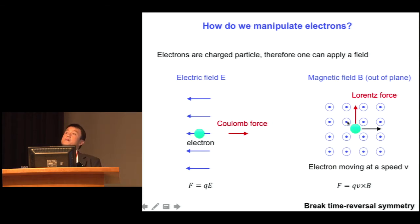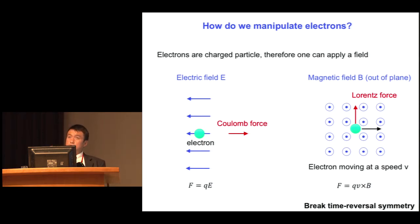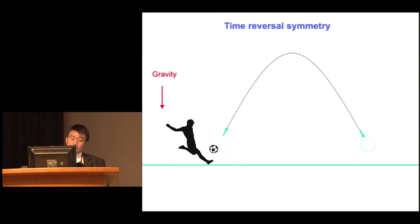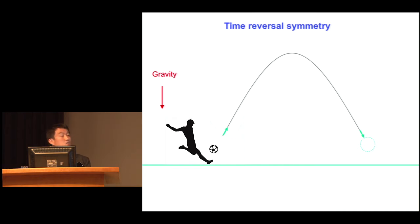For our purpose here, it is very interesting to note that there's something special about magnetic field: it breaks what's called time reversal symmetry. Since this is probably not an everyday concept, I want to illustrate it with an everyday example. Gravity, which we all experience, actually satisfies time reversal symmetry. To see that, imagine if you kick a soccer ball — it's going to go through a parabolic trajectory and end up somewhere else on Earth due to gravity.